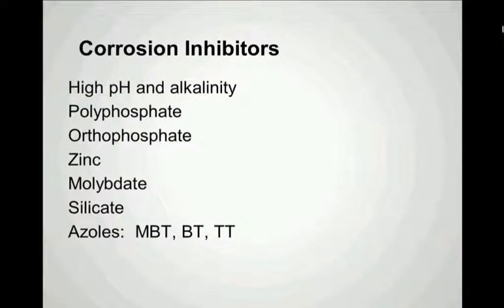Like with scale inhibition, there are chemical additives commonly used as corrosion inhibitors. One that is very easy to do and environmentally friendly is to operate the tower at higher pH and high alkalinity, using the natural alkalinity and pH of the make-up to make the water more alkaline and less corrosive in the system.